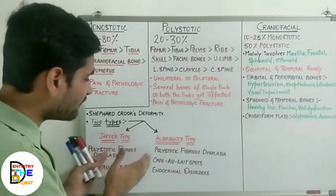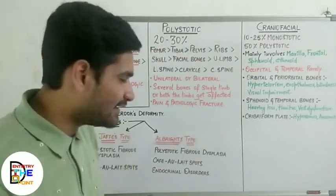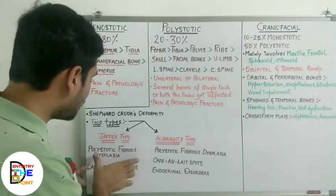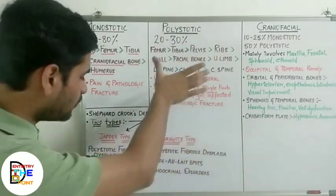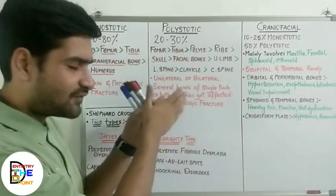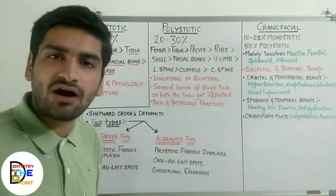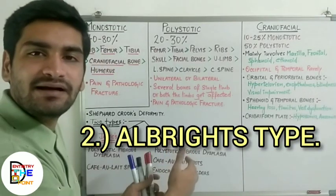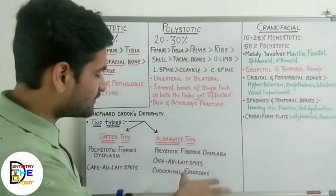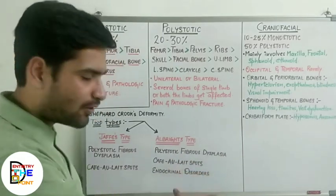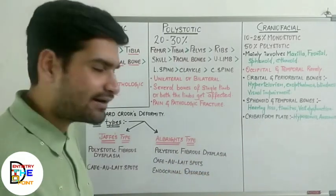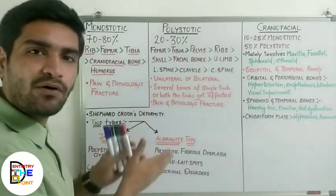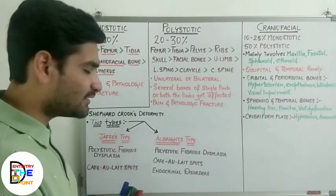There are two types of polystotic fibrous dysplasia: Jaffe's type and Albright's type. Jaffe's type has all the characteristics of polystotic fibrous dysplasia along with café-au-lait spots. Albright's syndrome — or Albright's type — contains polystotic fibrous dysplasia, café-au-lait spots, and additionally presents with endocrinal disorders.